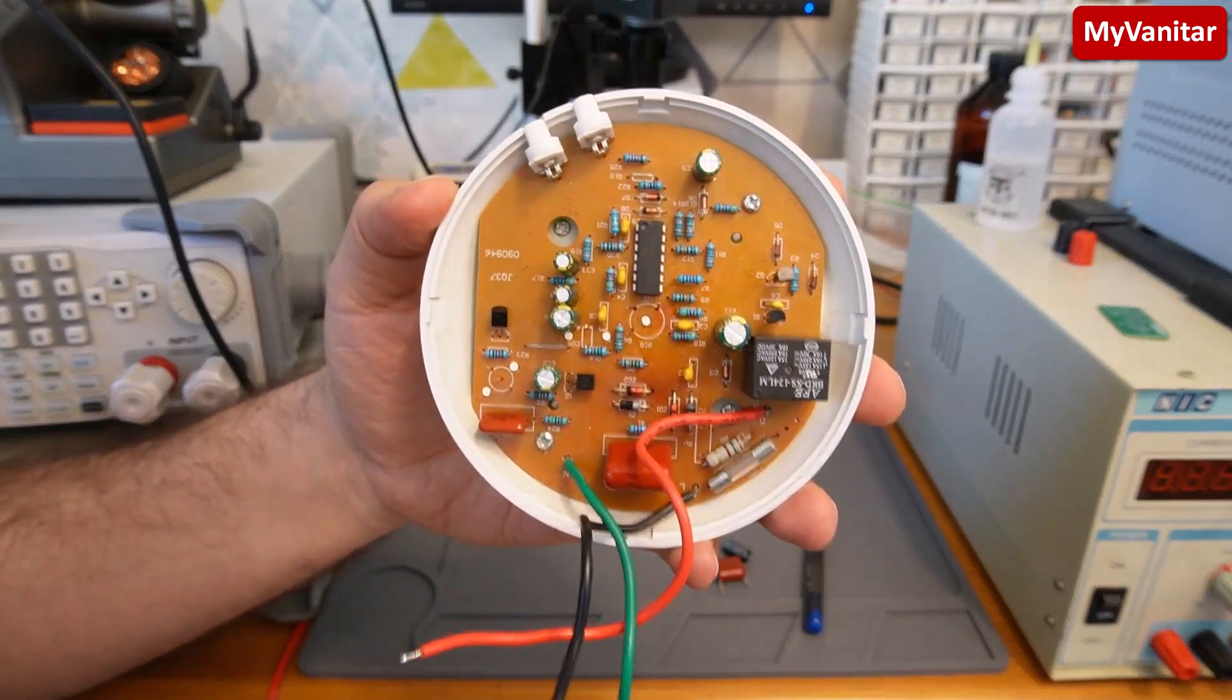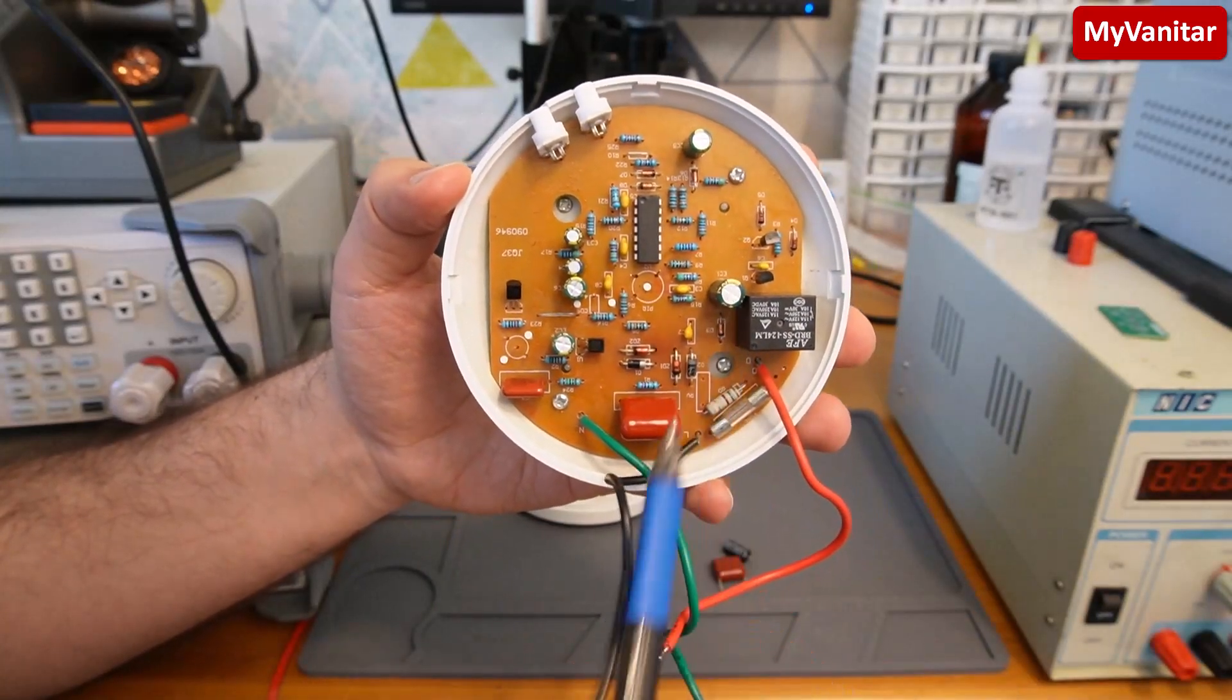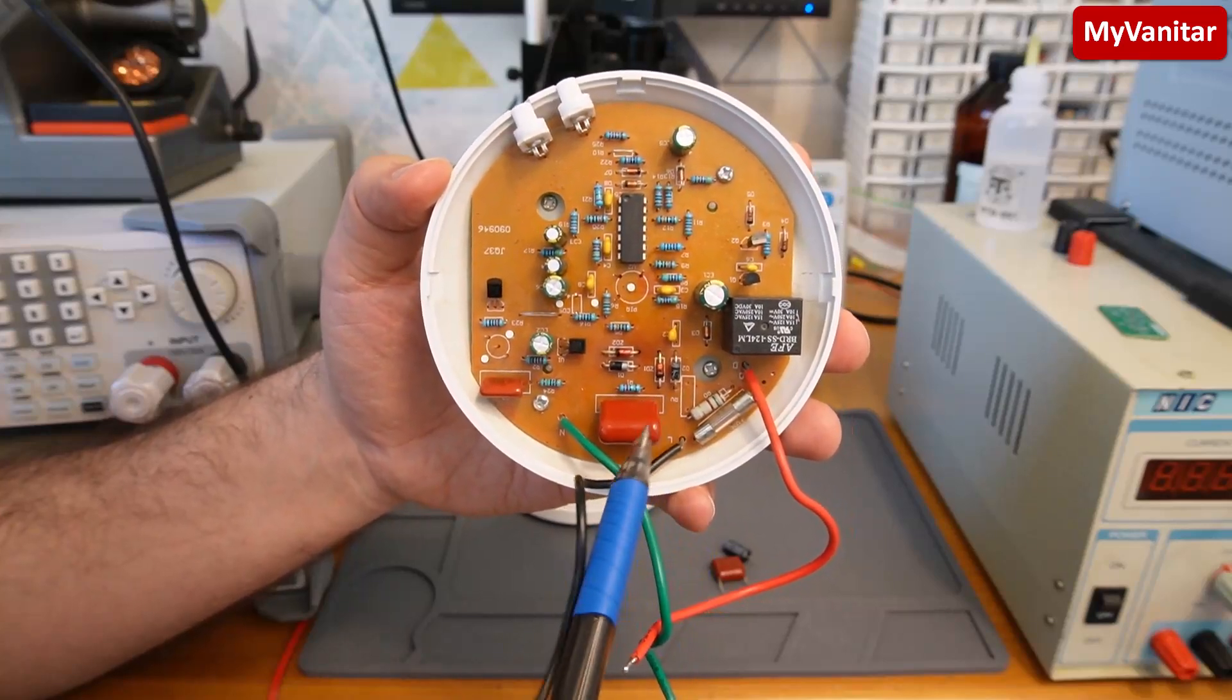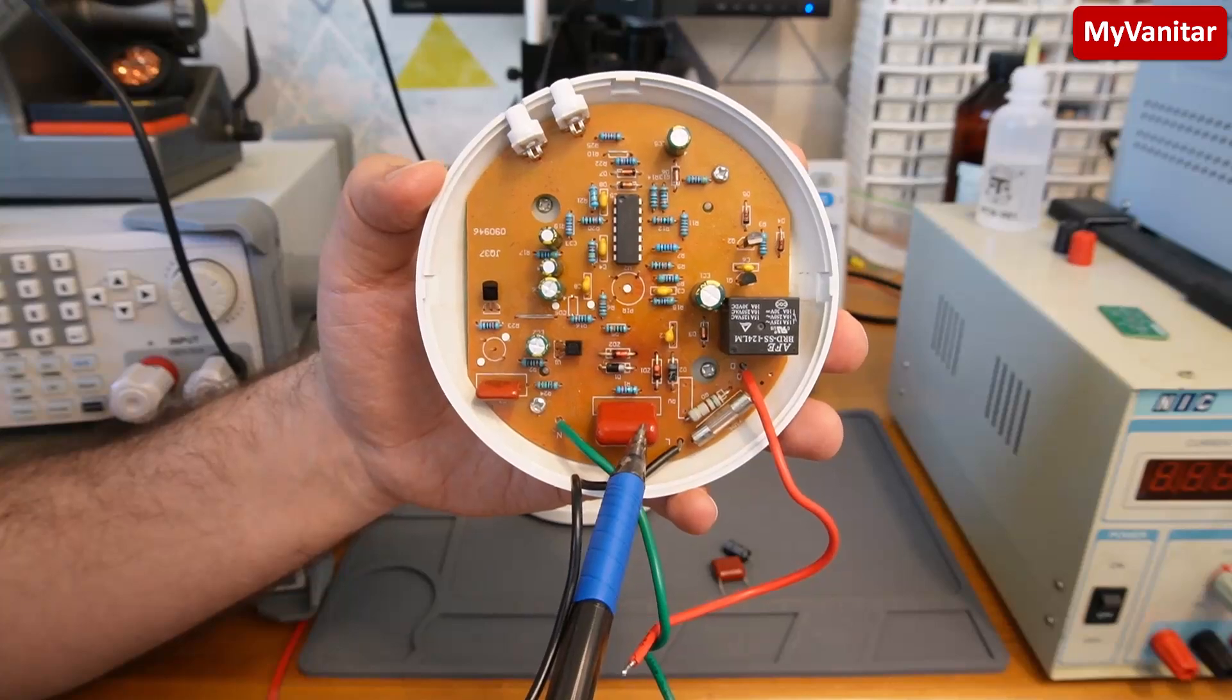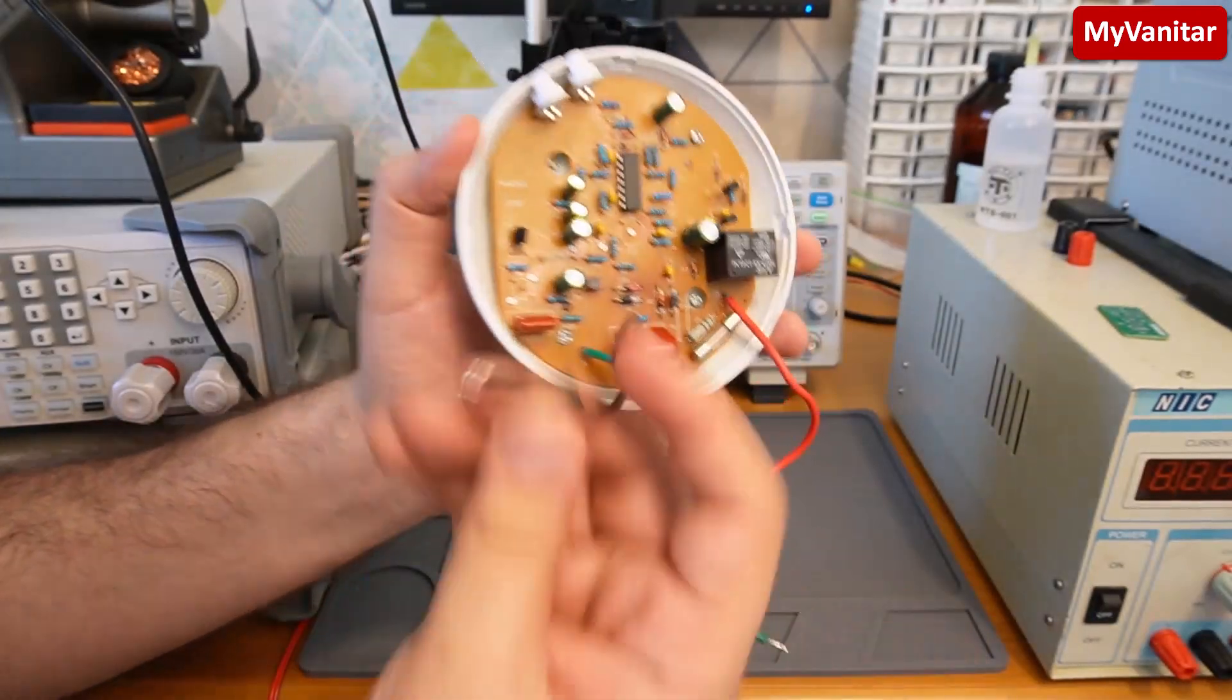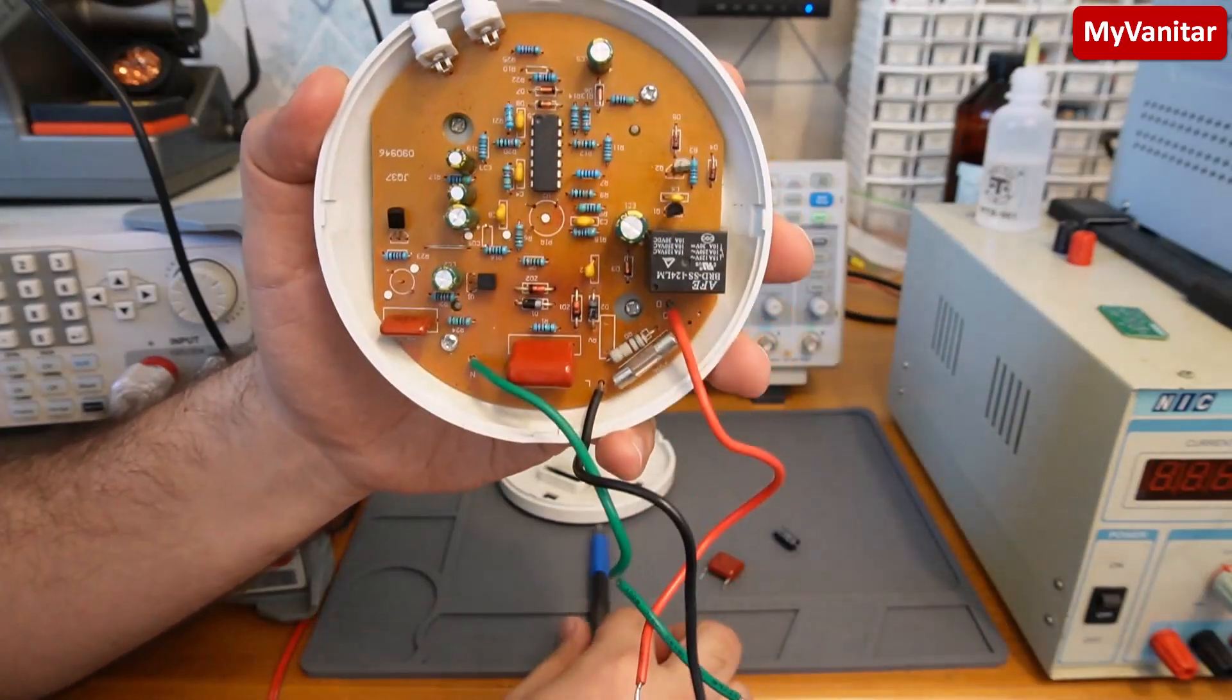I have already repaired this board. The problem was this capacitor and this capacitor. It is actually a capacitor based supply and this one had lost its capacitance. It is rated 470 nanofarad and it was reading 350. And also this one. This one was bulgy. Here it is. Without any measurement this is a bad capacitor, totally dried out.